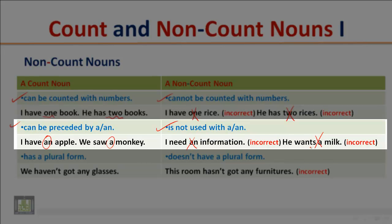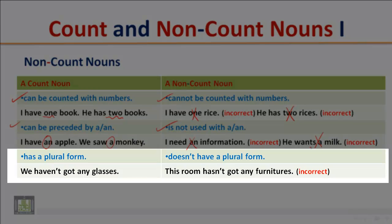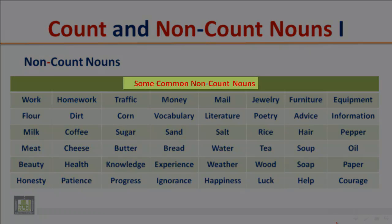A count noun has a plural form. For example: 'We haven't got any glasses' — 'glasses' is a count noun, it has a plural form. An uncount noun doesn't have a plural form, so it is wrong to say 'this room hasn't got any furnitures.' The word 'furniture' doesn't have a plural form — it is an uncount noun.